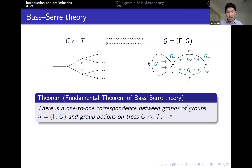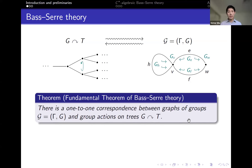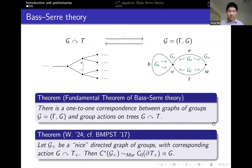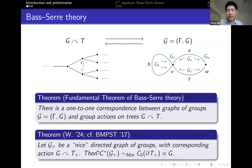We have two classes of data in front of us: graphs of groups, and group actions on trees. There's a way of constructing C*-algebras from both of these objects, and a natural question is: given that we have this relationship between the two objects, is there a relationship between the corresponding C*-algebras? As you might expect, the answer is yes. I've put this result up on the screen, but it's probably just meaningless symbols to you at the moment. In the first half of my talk I'll try to give you an understanding of what everything here means, and then after that I'll discuss how we can use this result to understand and work with the C*-algebras involved.